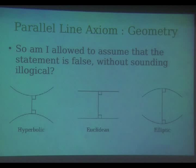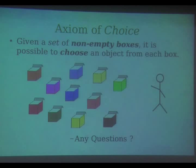So, what is the axiom of choice? It says that given a set of non-empty boxes, you can choose an element from each box. Do you have any questions on this? I mean, would you call this obvious or self-evidently true? Anybody would be tempted to say such a thing. But let us see what is the fuss about the axiom.